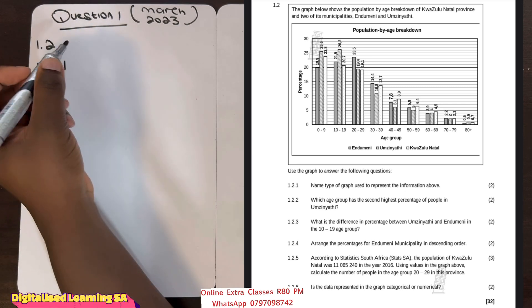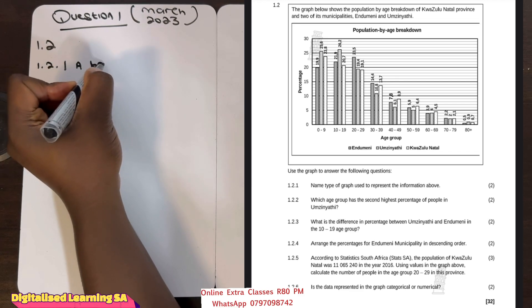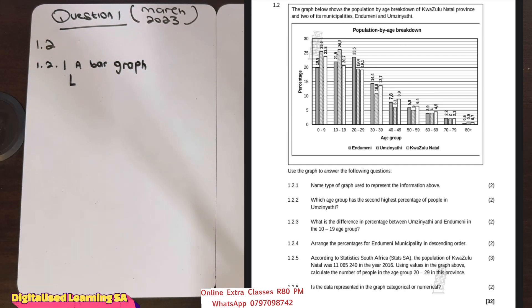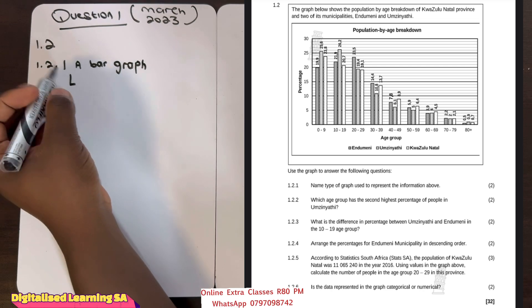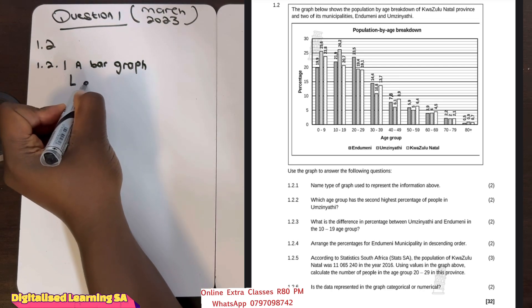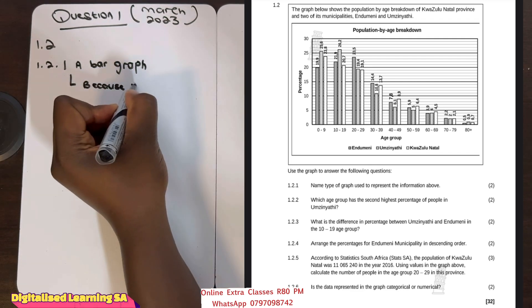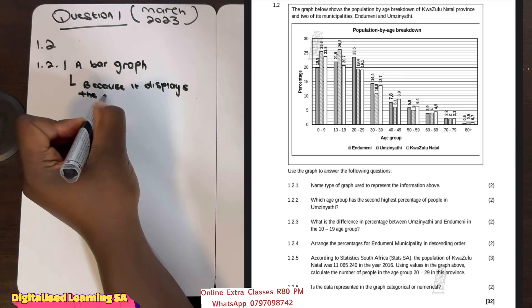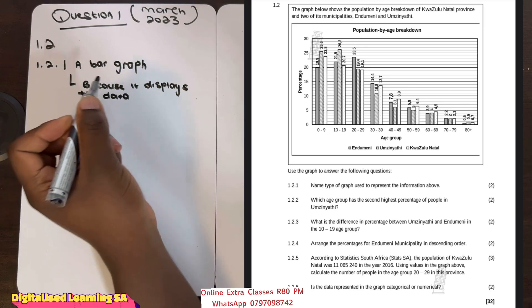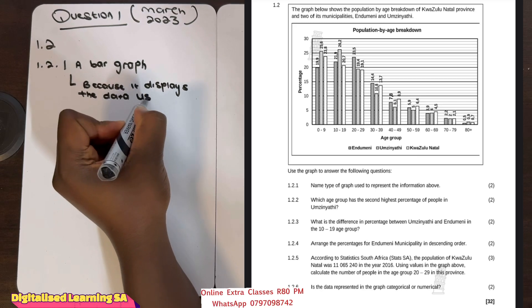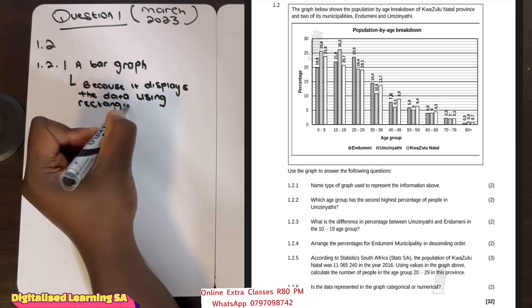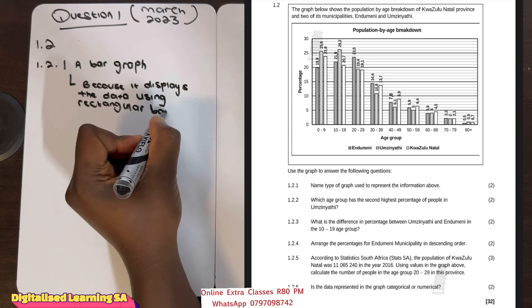This one is easy. The answer will be a bar graph. It's a bar graph because it displays the data using rectangular bars, as you can see on the graph.